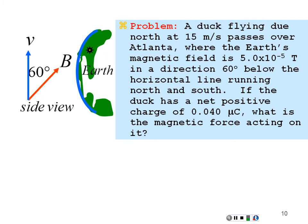Example: a duck flying due north at 15 m/s passes over Atlanta, where the Earth's magnetic field is 5 × 10⁻⁵ Tesla directed 60 degrees below the horizontal along the north-south line. The duck has a net positive charge of 0.4 microcoulombs. We want to find the magnetic force on it. The Earth's magnetic field is going from south to north geographically, but here it is directed down into the Earth at 60 degrees.